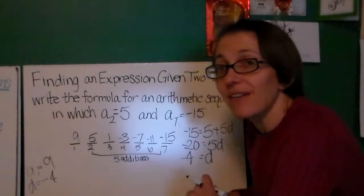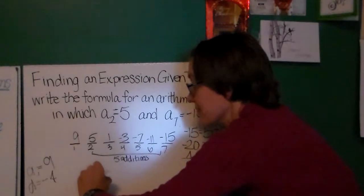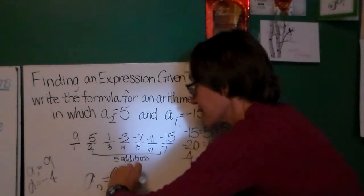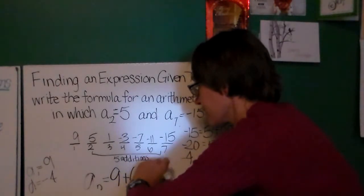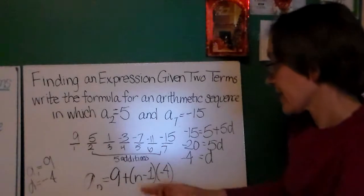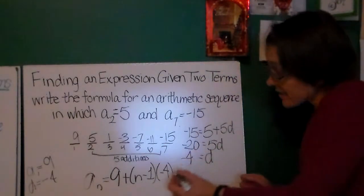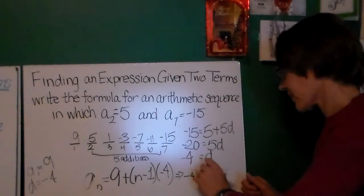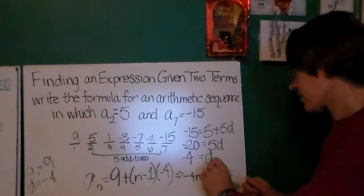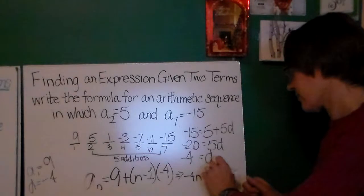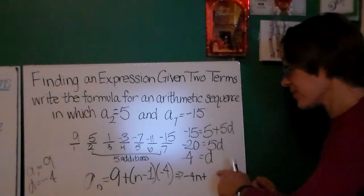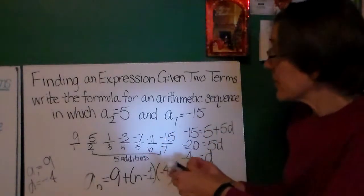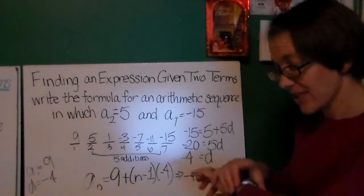I'm going to write my formula given the same model I had on my first slide. I'm going to write a sub n, any term, is a sub 1, 9, plus n minus 1, times negative 4. Once again, I could choose to rewrite this. I'll do that right over here. I could rewrite it as negative 4n plus 5. I did that wrong. Negative 4n plus 13 was really what I wanted to write. Negative 4n plus 13. Always a good idea to just check your answer and be sure that it works. So there we are with finding an expression given any two terms in your sequence.